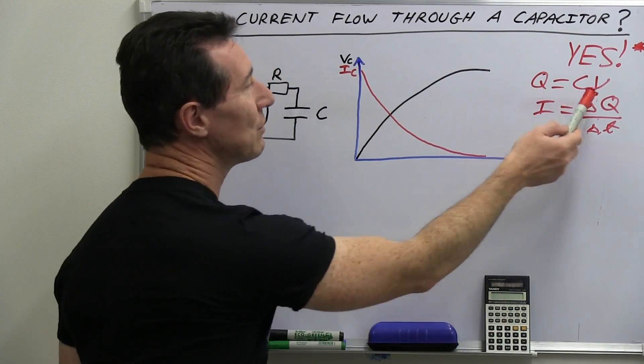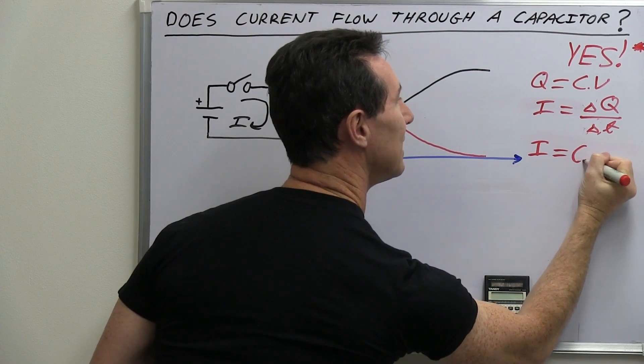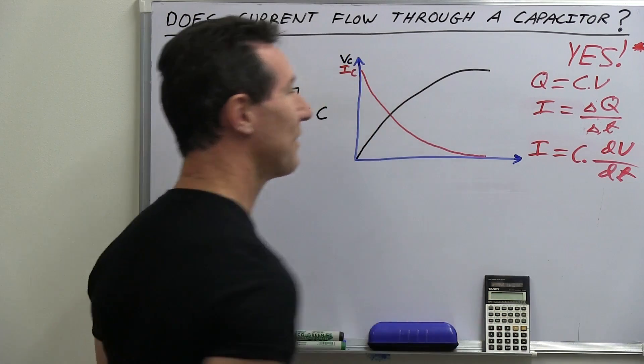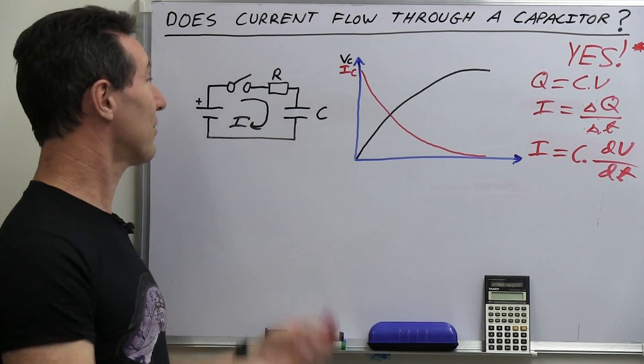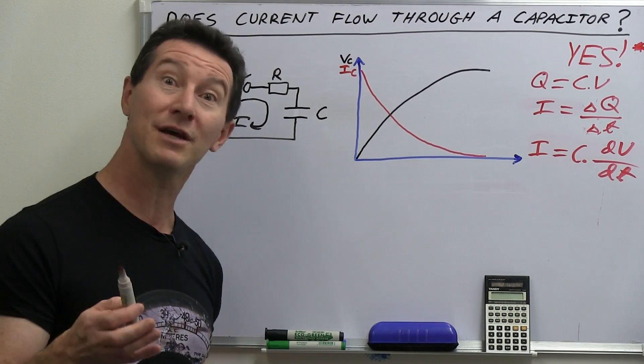And because charge equals c times v, you can write that again, i equals c times dv dt, like that. And, you know, there's all sorts of equations for currents flowing in various circuits. So current does flow through a capacitor. Or does it?